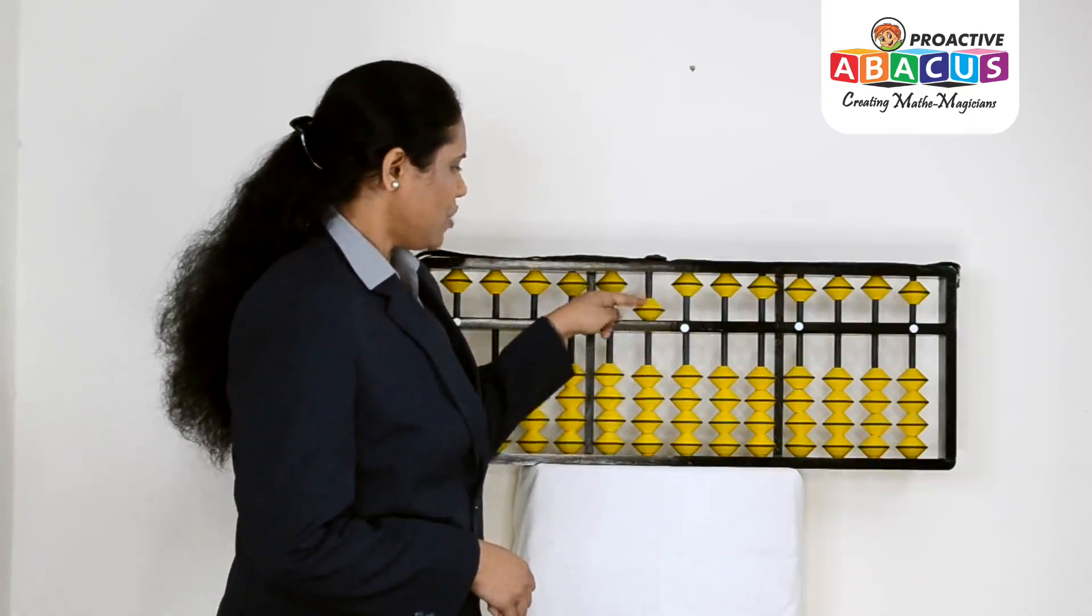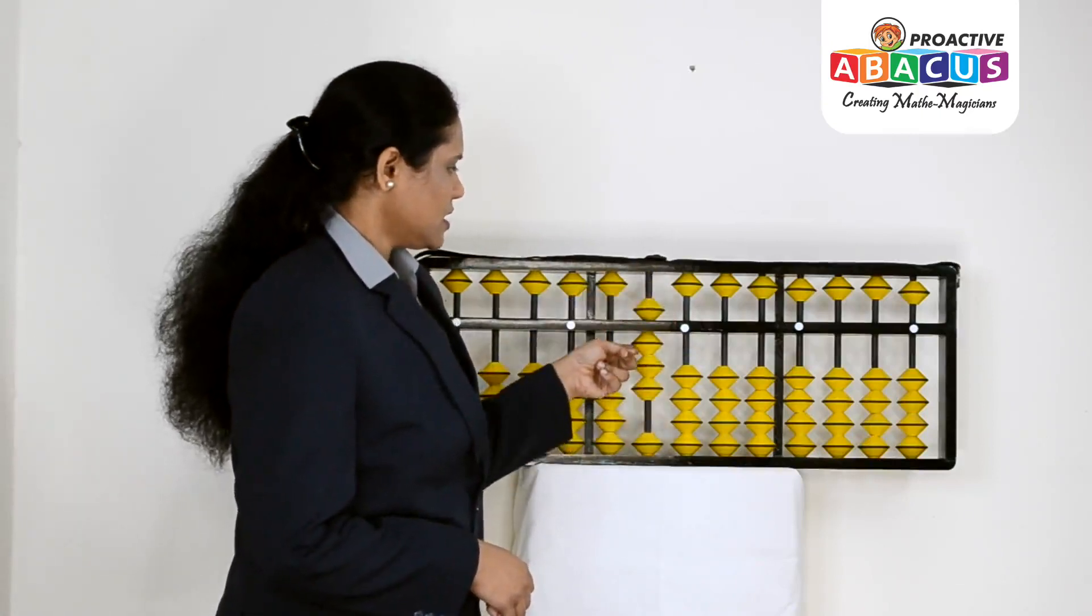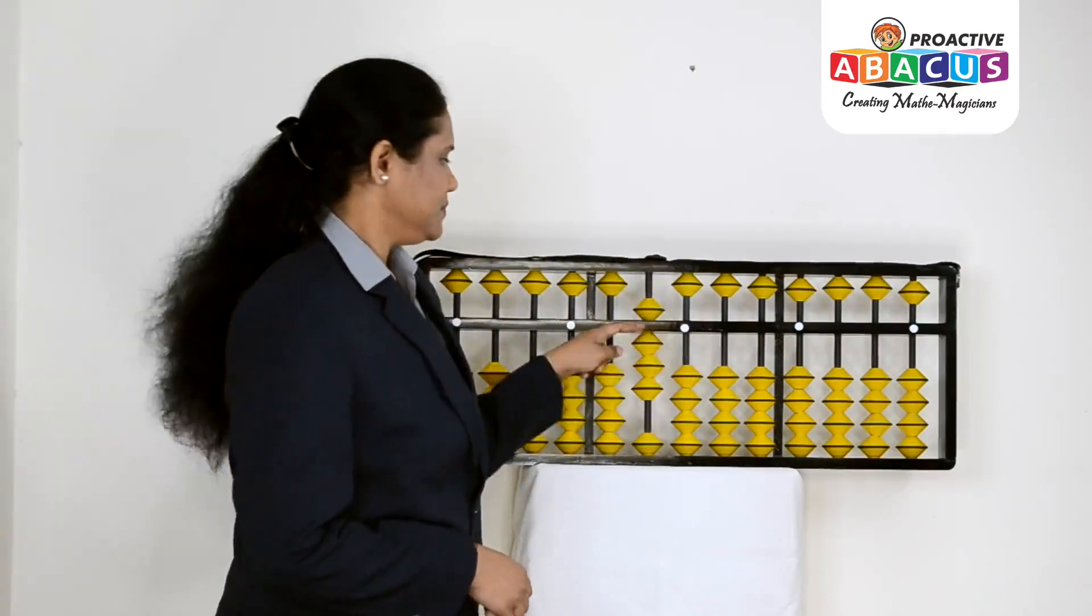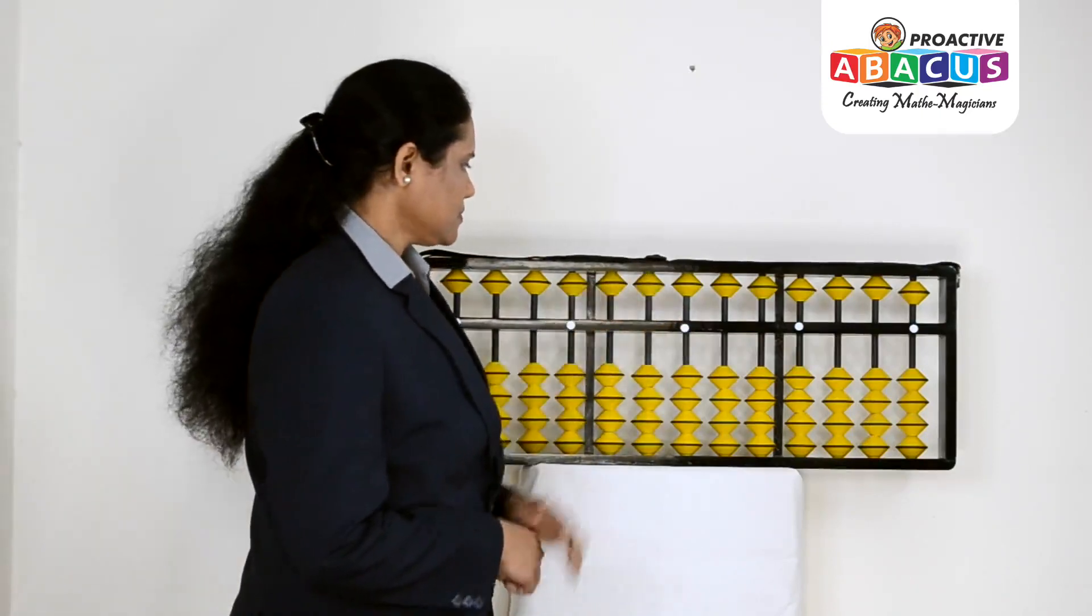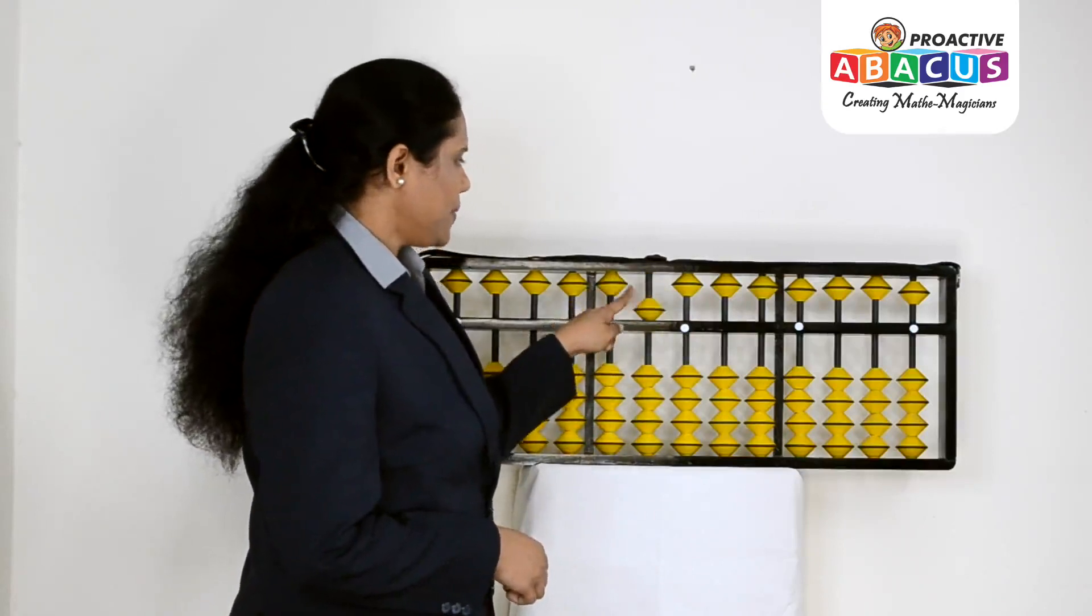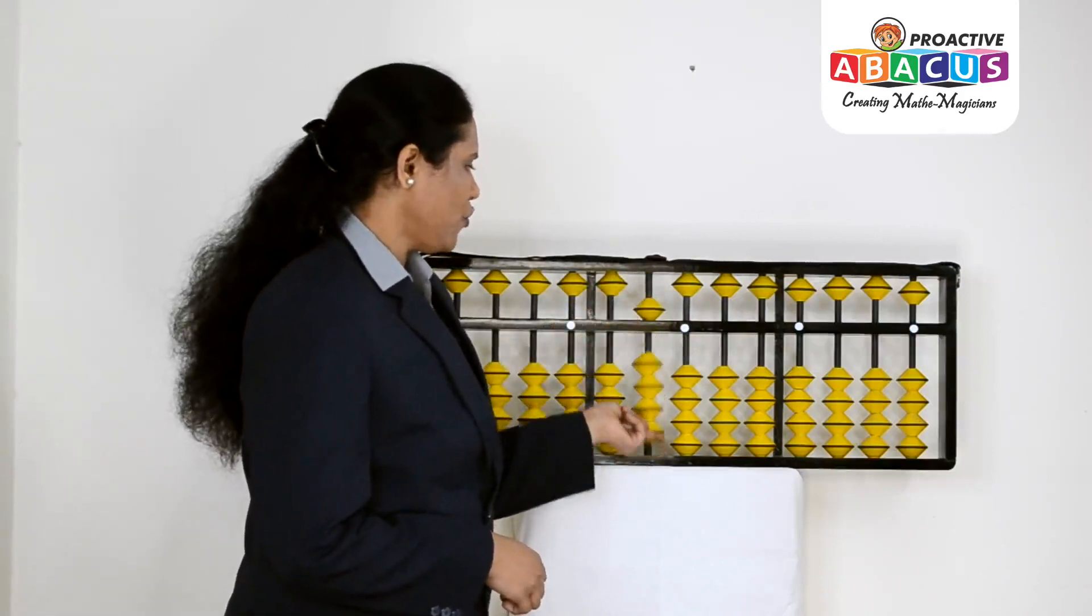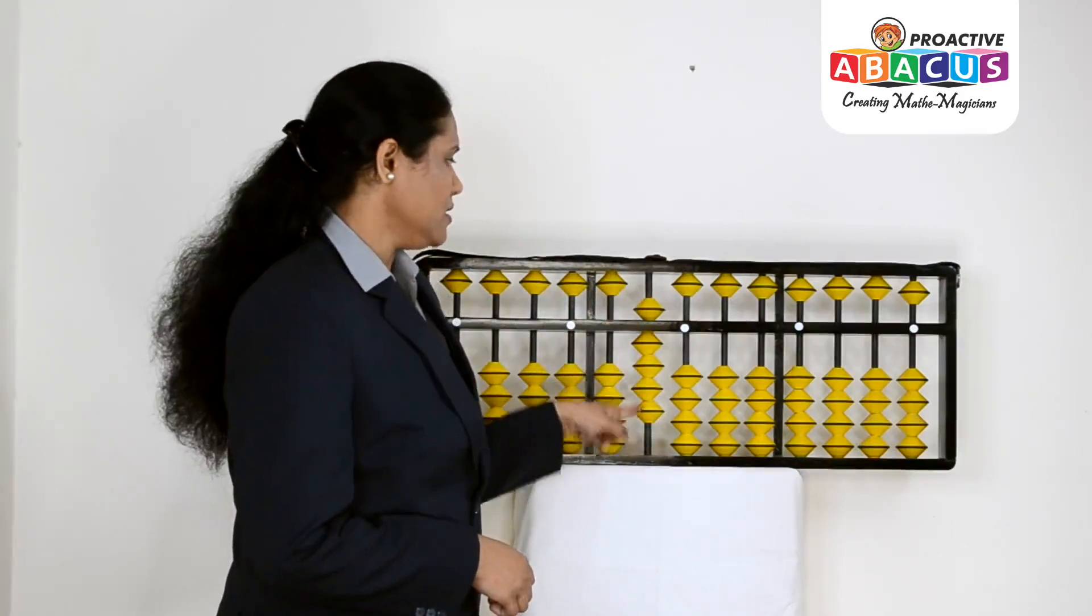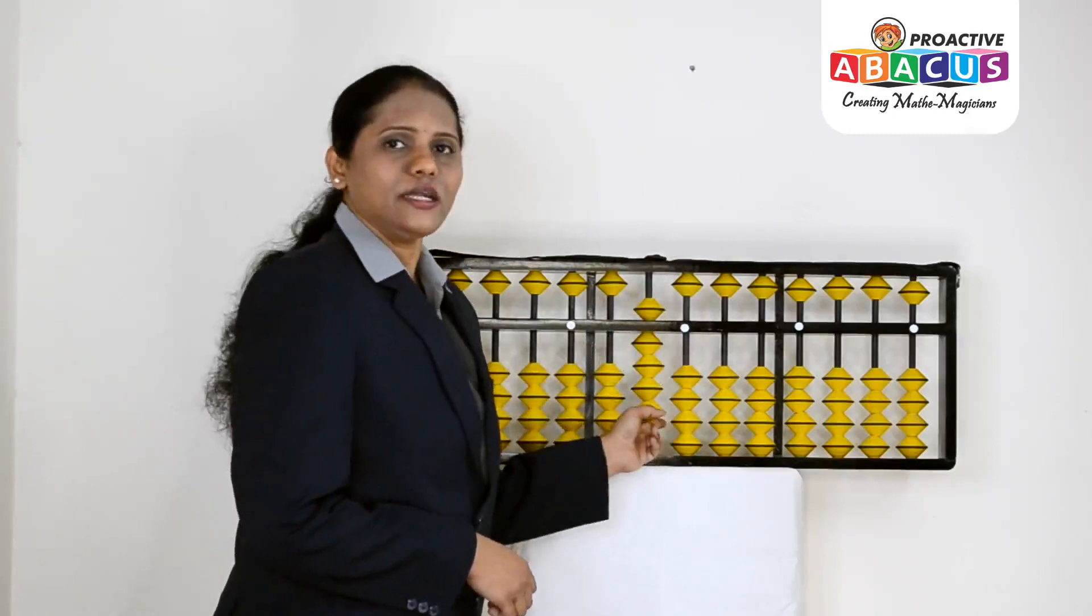For 80, 5, 6, 7, 8, unit place 0, that's 80. For 90, we have upper deck 5 beads and lower deck 4 beads: 5, 6, 7, 8, 9. Tens place is 9, unit place is 0, that's 90.